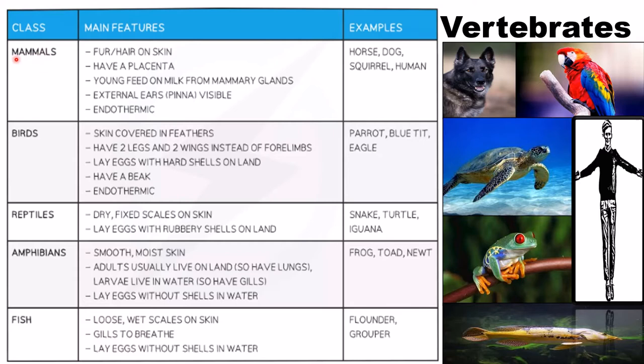Let's discuss vertebrates. There are five classes: mammal, bird, reptile, amphibian, and fish. The features of mammals include fur, a placenta, feeding young from mammary glands, external ears, and they are endothermic. Examples are horse, dog, squirrel, and human.